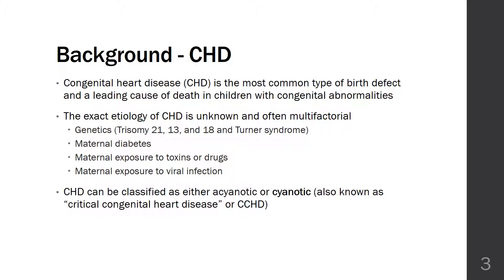So why is this topic relevant? Congenital heart disease, or CHD, is the most common type of birth defect and is a major cause of death in pediatrics, especially in those with congenital abnormalities in general. The exact cause of CHD is not fully understood, but is often due to a number of factors. Some common risk factors include genetics, such as trisomy 21, and maternal exposure to drugs and toxins, as well as infections.